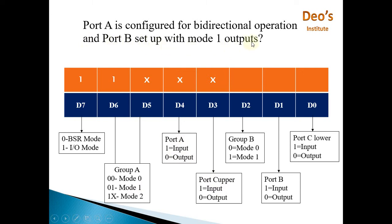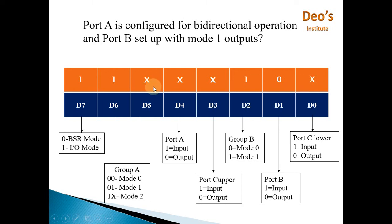Port B is set up with mode 1, so group B must be in mode 1 — D2 is one. Mode 1 output means D1 is zero for port B output. When port A is in bi-directional mode, port C lower is also used for handshaking, so D0 is don't care. Replacing all don't cares with zero, the control word becomes 1100 0100, giving a final answer of 0xC4.